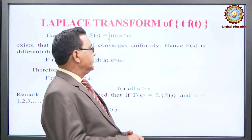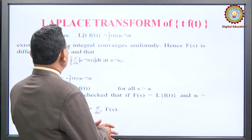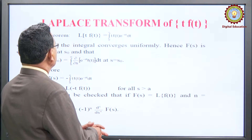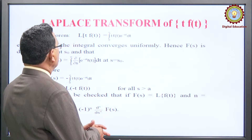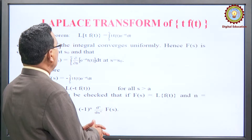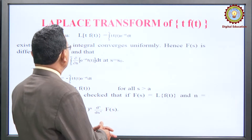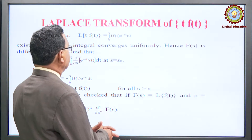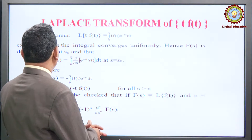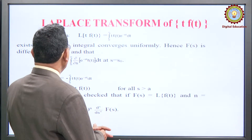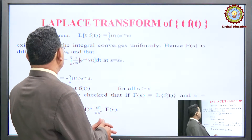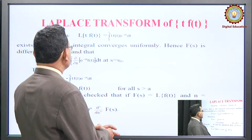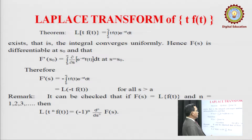The Laplace transform of t·f(t): how to find the Laplace transform of t multiplied by f(t). The theorem states that L{t·f(t)} = ∫₀^∞ t·f(t)·e^(-st) dt. If this integral converges uniformly, then F(s) is differentiable at s₀, and F'(s₀) = ∫₀^∞ (∂/∂s)[e^(-st)·f(t)] dt evaluated at s = s₀.